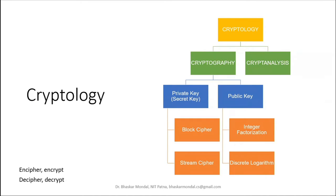Cryptology can be divided into two parts: cryptography and cryptanalysis. Cryptanalysis is the method of breaking the cipher, while cryptography is the method of encrypting and securing messages. Cryptography itself can be divided into private key (secret key) encryption and public key encryption. Private key encryption includes block ciphers and stream ciphers. Public key encryption includes integer factorization-based techniques such as RSA, and discrete logarithm-based techniques such as elliptic curve cryptography.